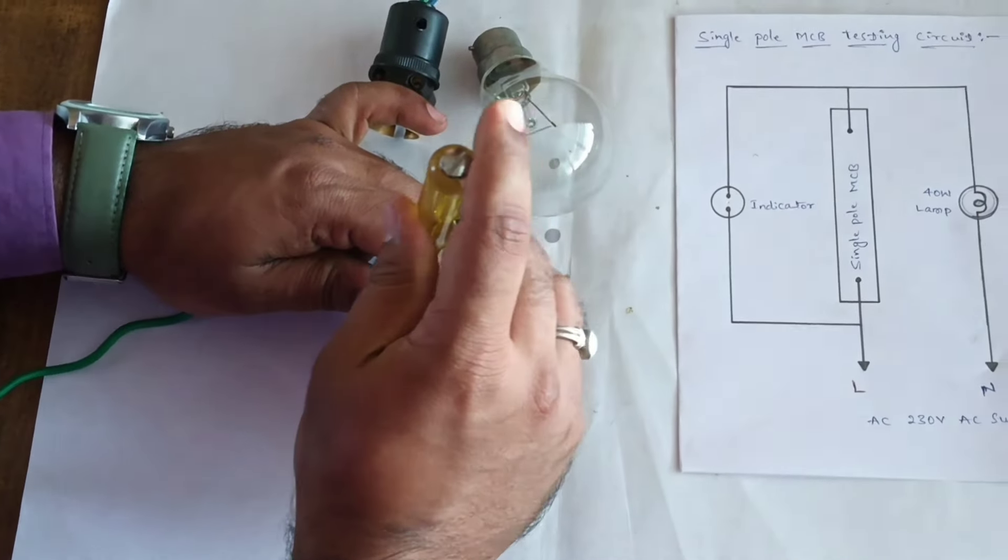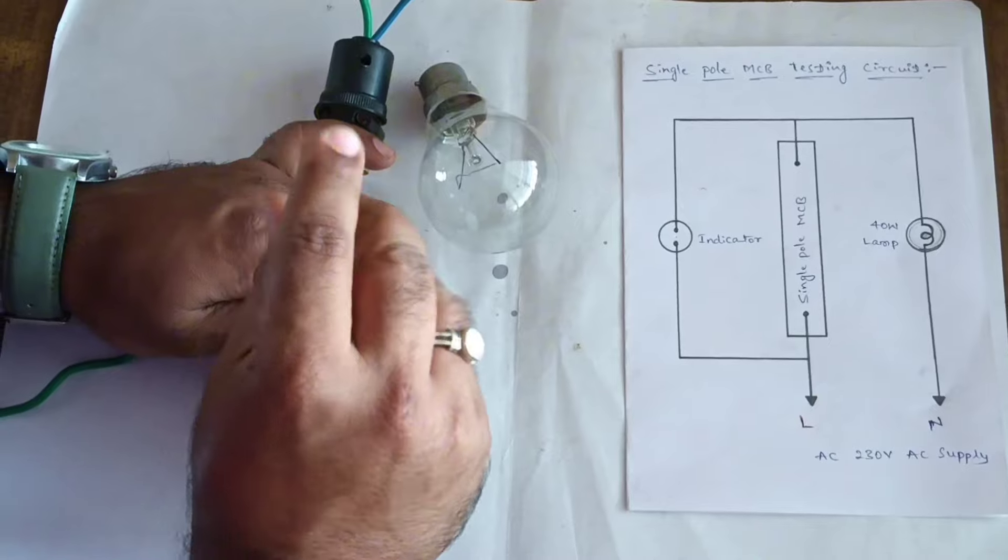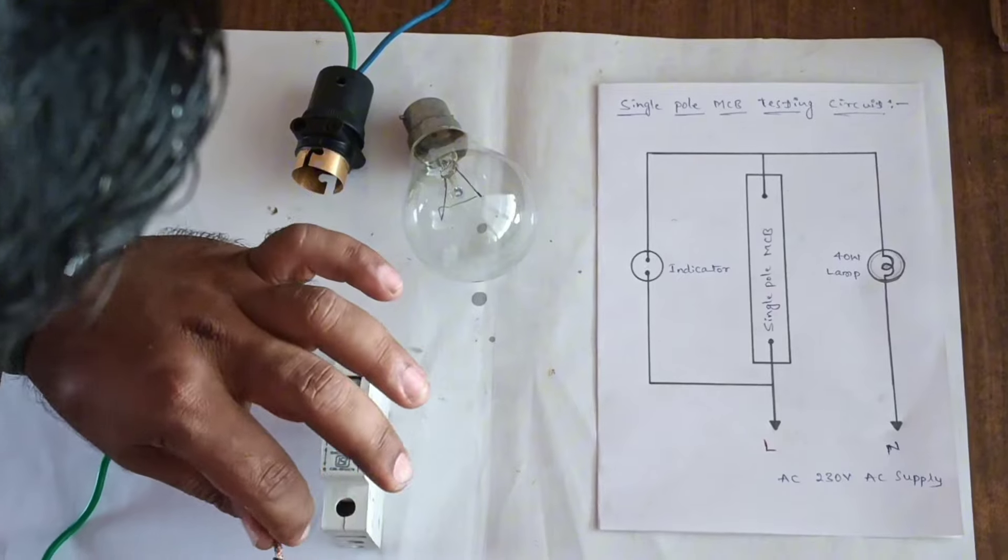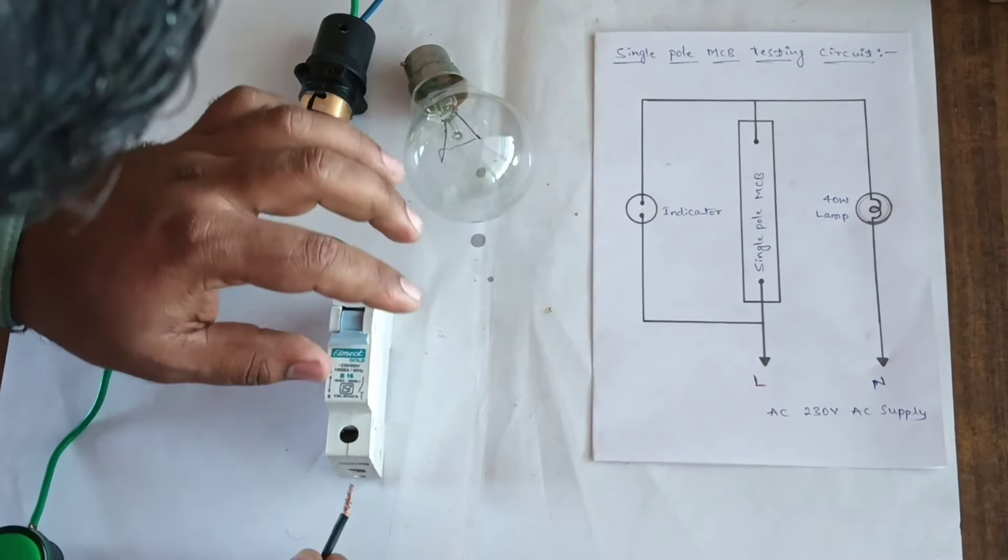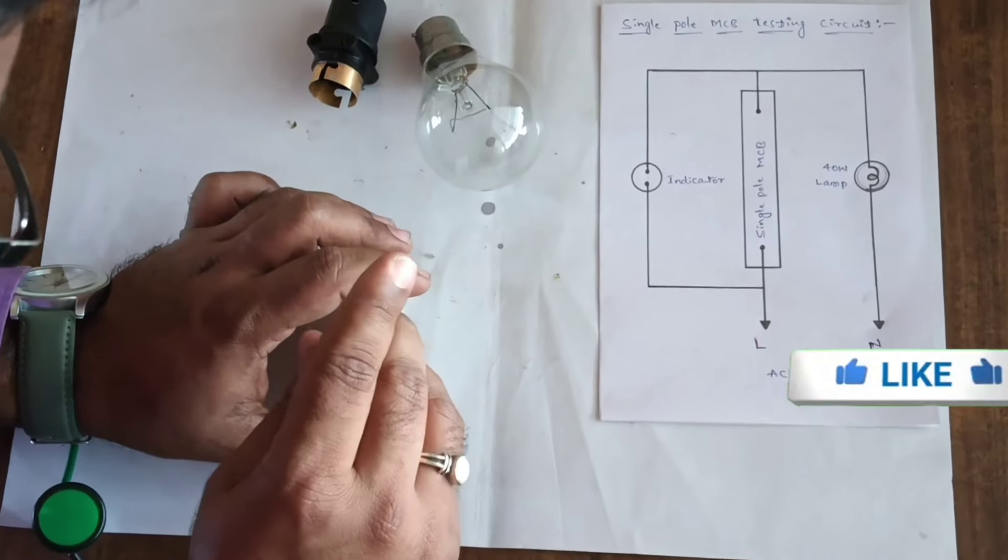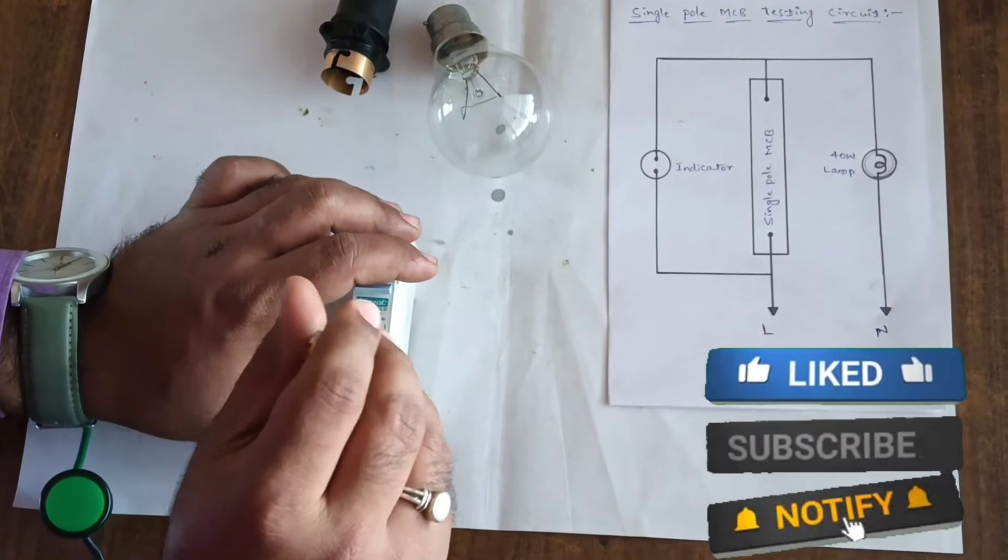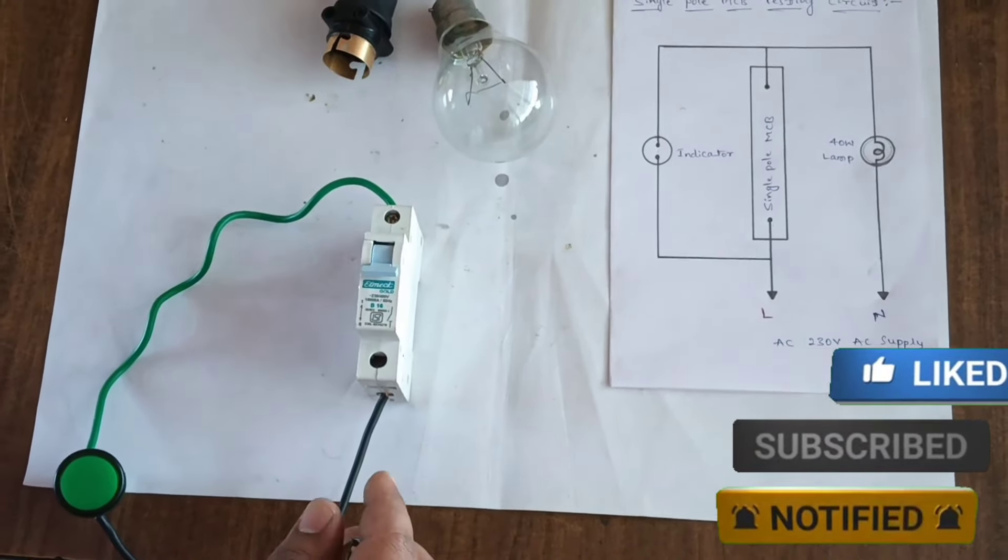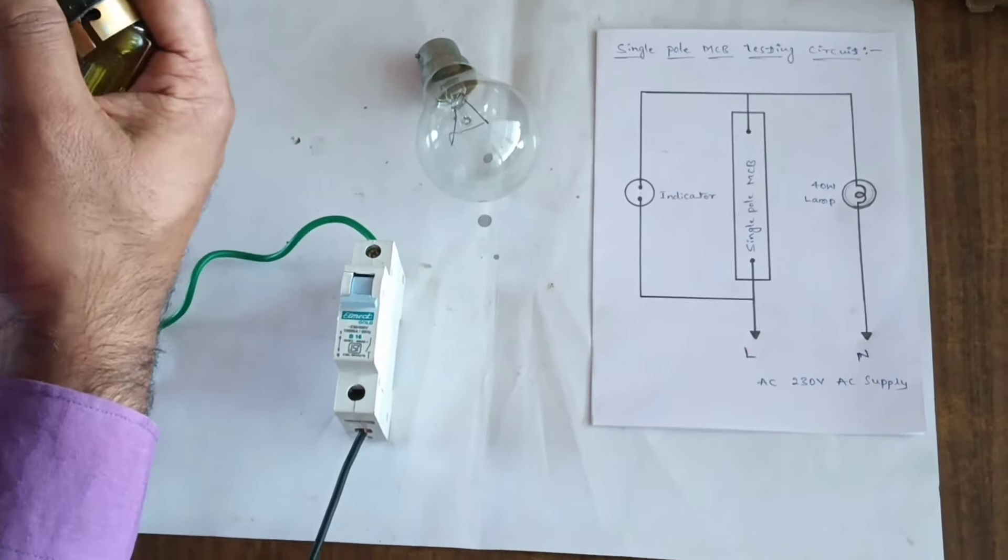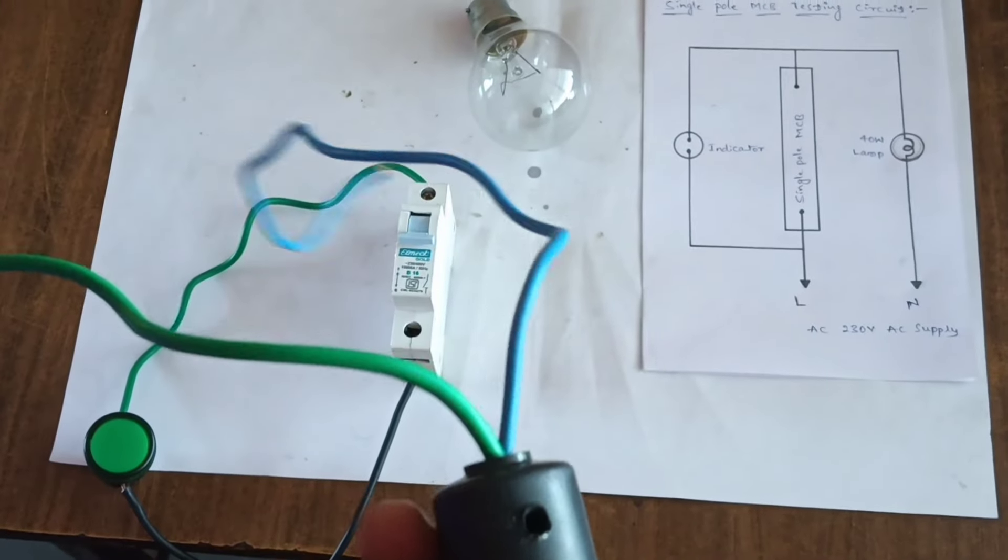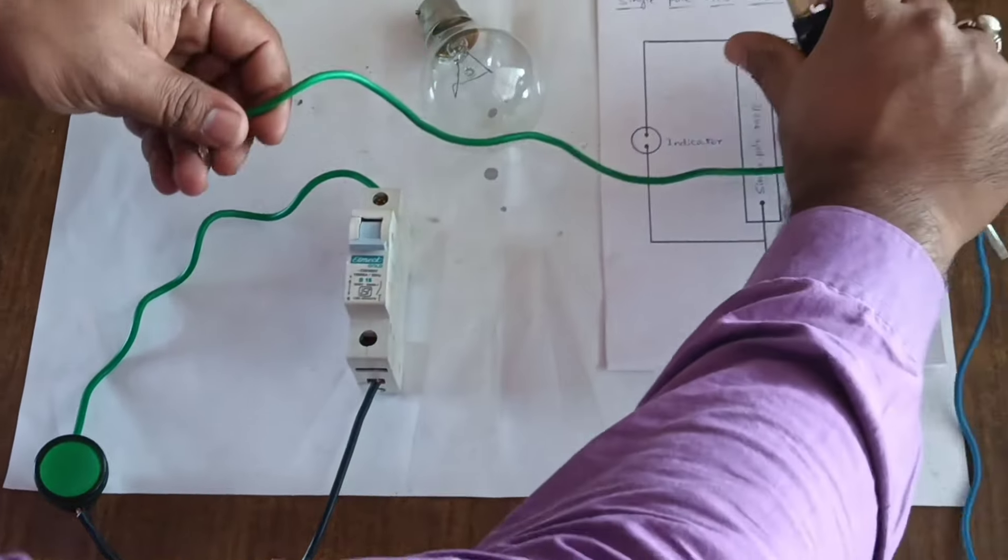Connect one wire on upper side of the MCB and another indicator wire is connected to MCB. Next, take the holder. One wire is connected to MCB upper side.